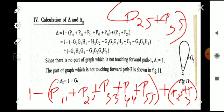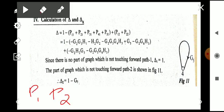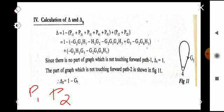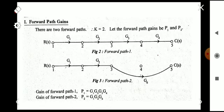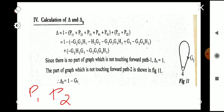Next we find delta1 and delta2, because there are two forward paths P1 and P2. Mason's gain formula is T = (1/Δ)·Σ pk·Δk, which becomes (p1·Δ1 + p2·Δ2) / Δ. So we need to find Δ1 and Δ2.